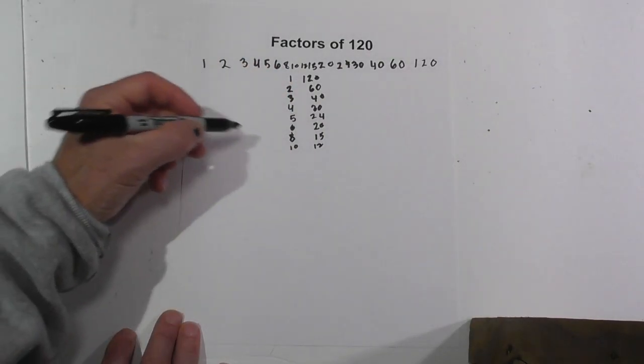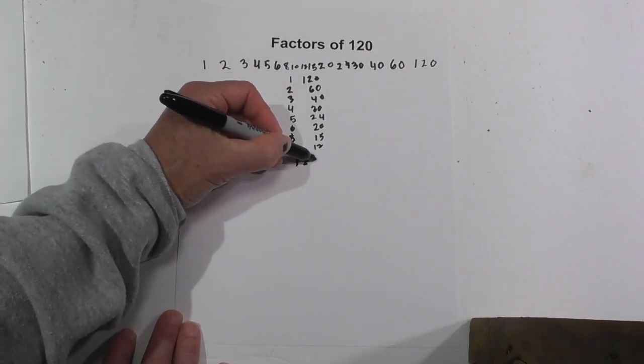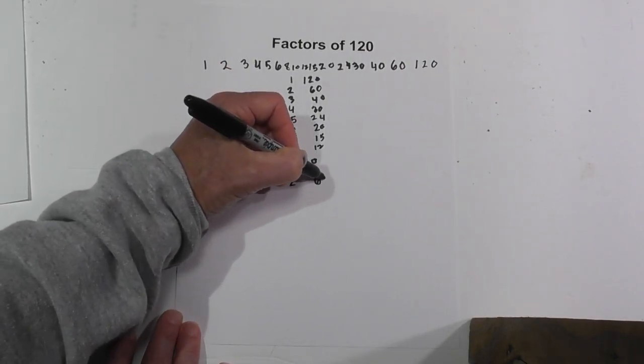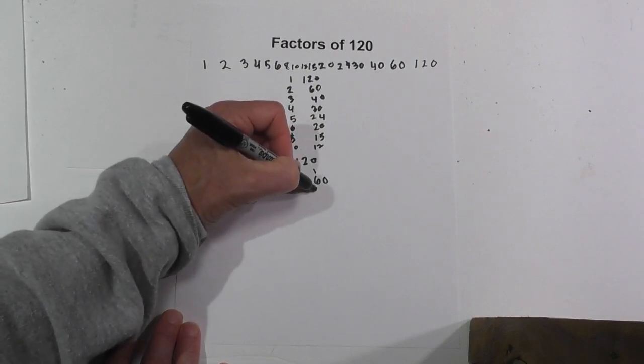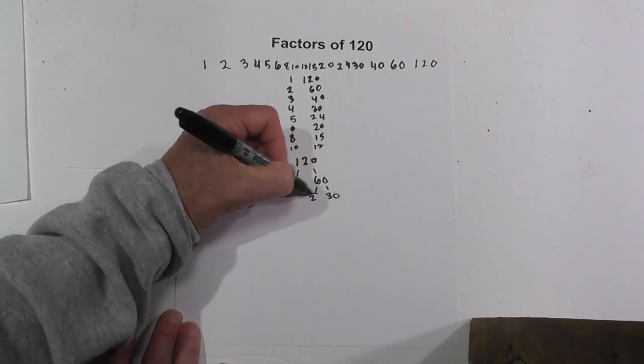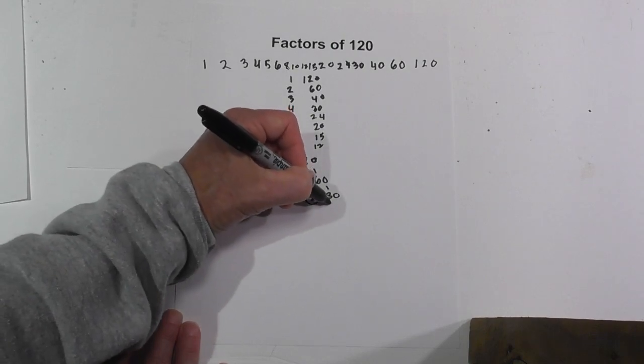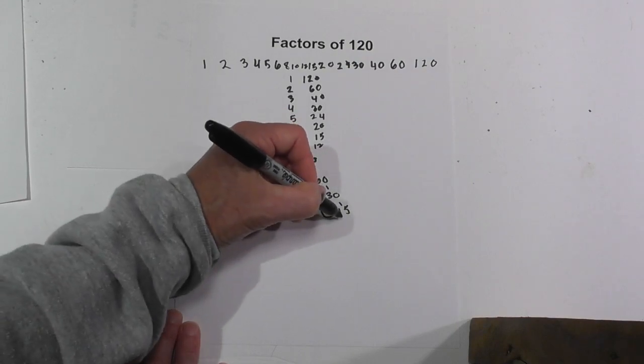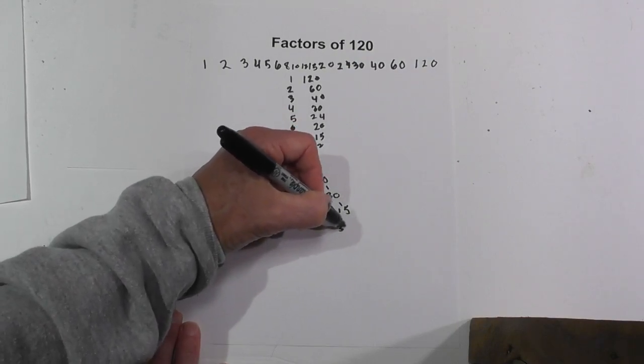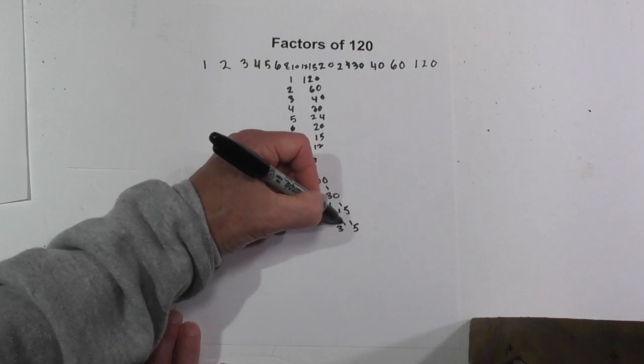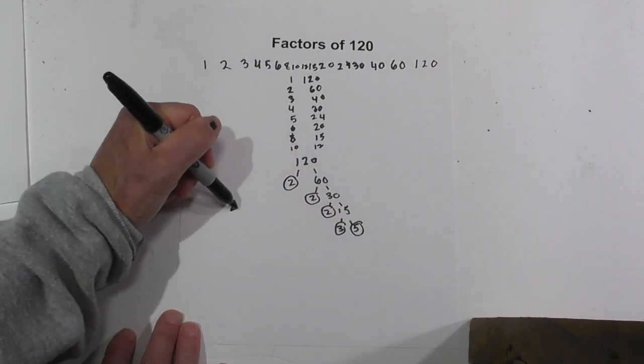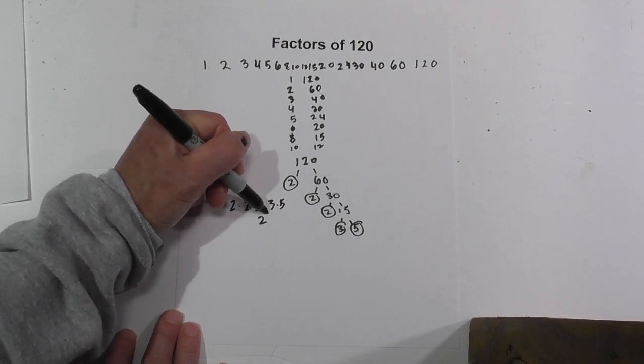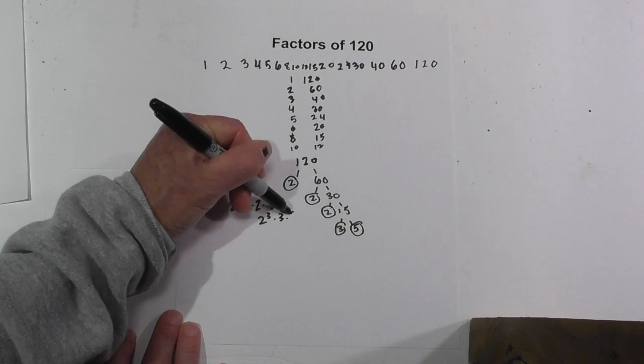Now if we were to complete a factor tree for its prime factors, we could begin with 2 times 60. Circle the 2 because it is prime, 2 times 30. Circle the 2 because it is prime, 2 times 15 because 2 is prime, and then 3 times 5. Circle both of these because they're primes. This would be 2 times 2 times 2 times 3 times 5, or 2 cubed times 3 times 5.